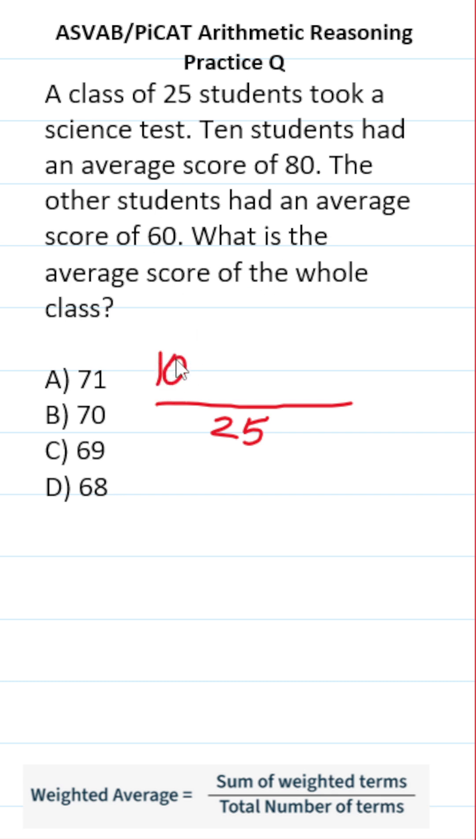10 of the students scored an 80, so that's going to be 10 times 80 plus... if 10 students got an 80 and the rest of the students got a 60, 25 minus 10 is 15. That means 15 of the students scored a 60.